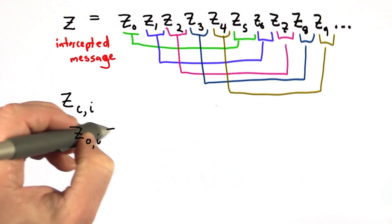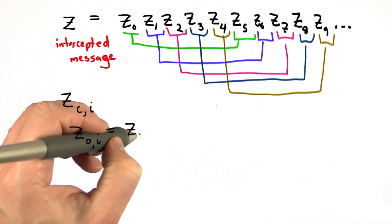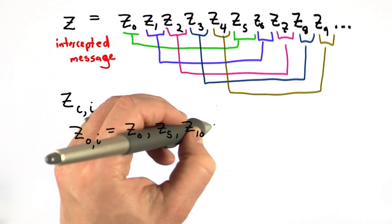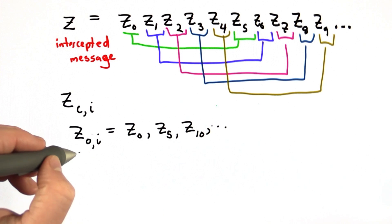If we look at channel 0, that's going to be z0, z5, z10. We can just break the ciphertext up into channels.